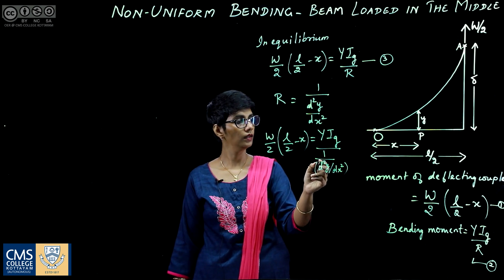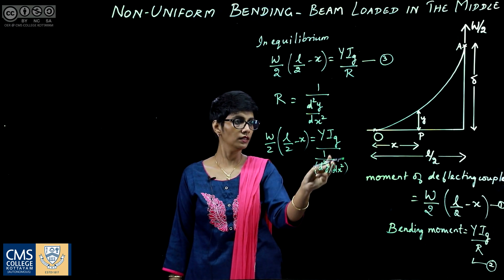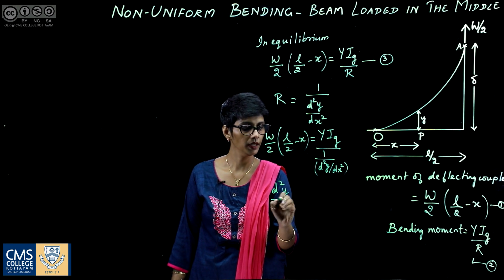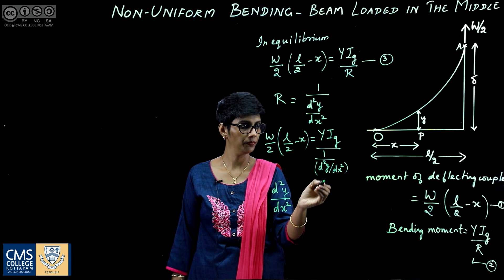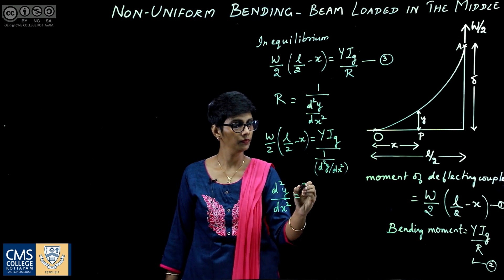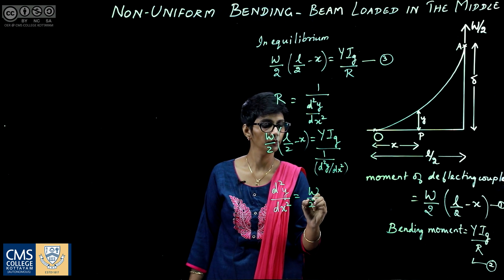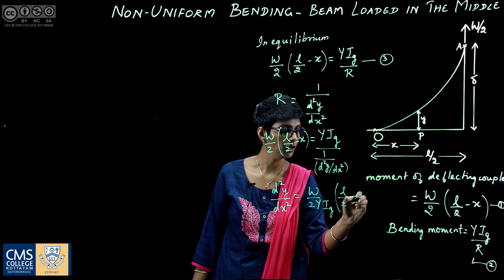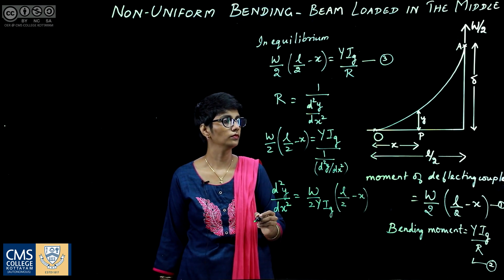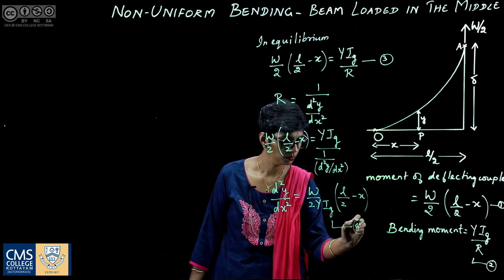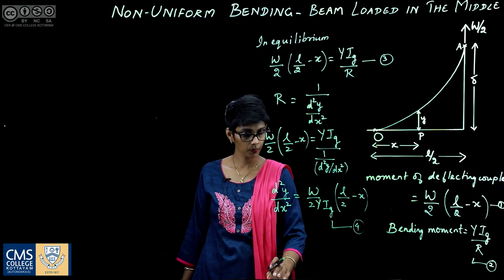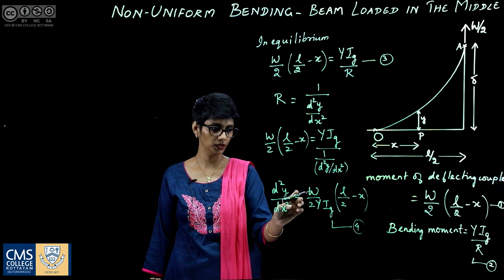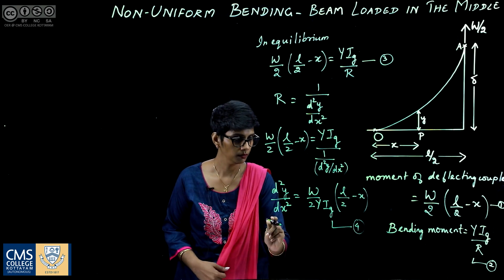We want to find the elevation Y, so we rearrange the equation to: d²Y/dX² = W/(2·Y·I_G) × (L/2 − X). This is equation number 4. To get the elevation Y we need to integrate this equation.